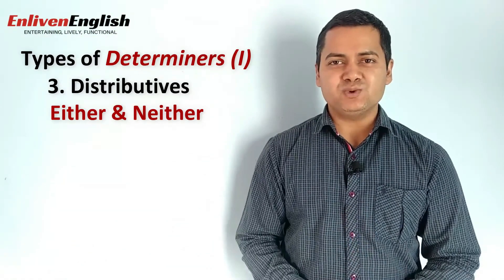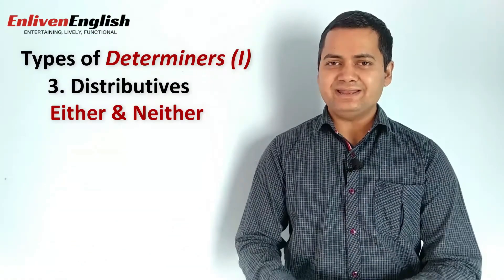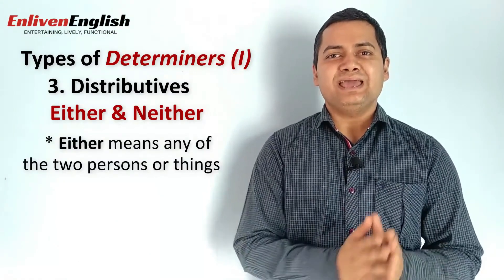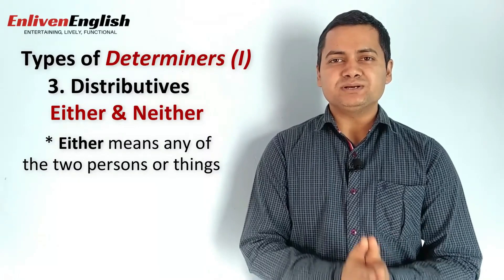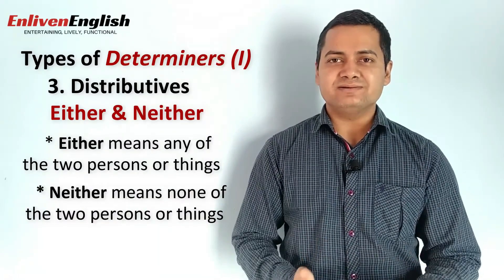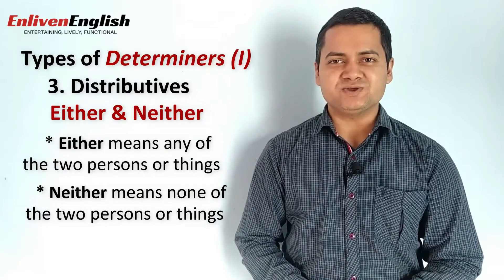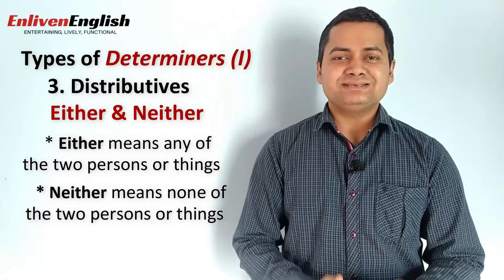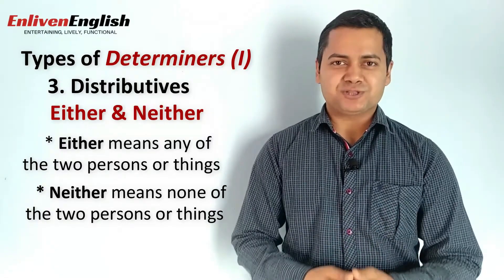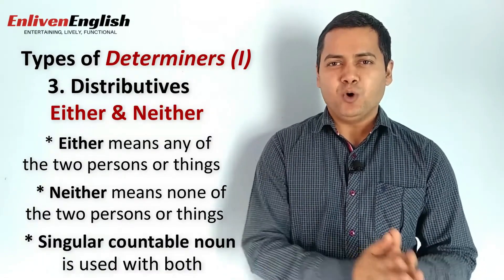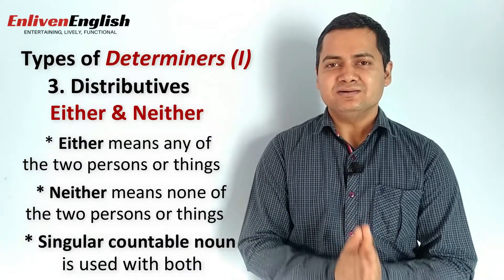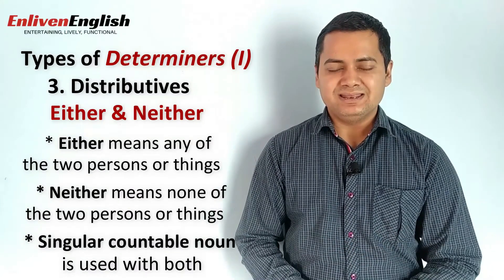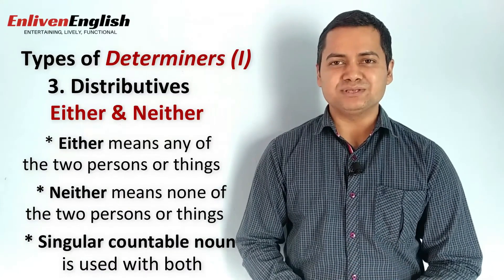Now, let's see how we can use either and neither. Either means any of the two persons or things. Neither is the opposite of either and means none of the two persons or things. Both take a singular countable noun and a singular verb. Let's see some examples.